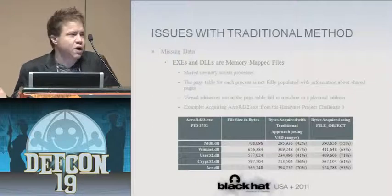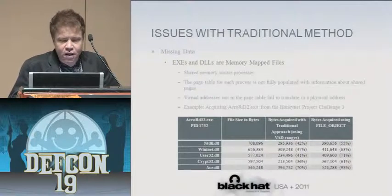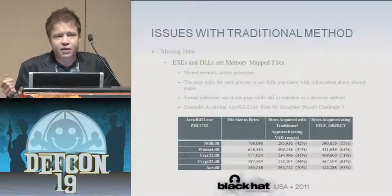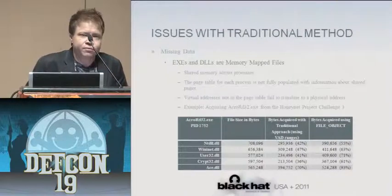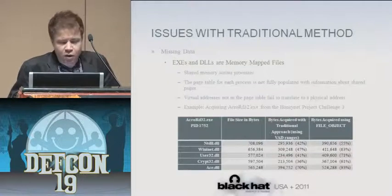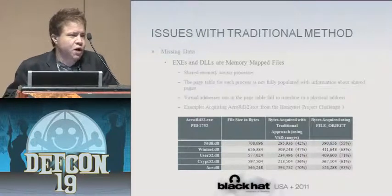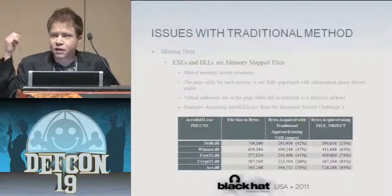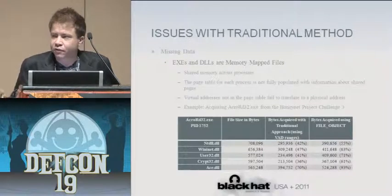These memory-mapped files are shared across all processes even if used once. Because of this, they may be in your process address space, but the address they represent may not translate in your page table entries. The page table entry is the very last table structure found when doing virtual-to-physical address translation. When you go to read it to find out where the physical page is, it's all zeros. That means typically you just had to ignore that region because you couldn't get access to it.